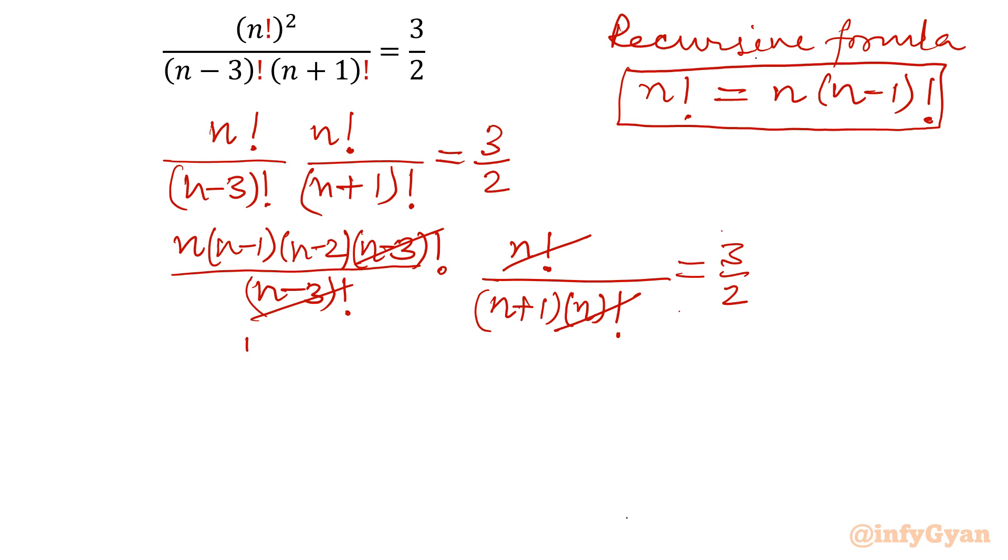Now what is left? n, n minus 1, n minus 2. Now let's cross multiply the numbers and variables. So I will write 2 times n. Let me take the product of n minus 1, n minus 2. So it will become n square minus 2n minus n, minus 3n plus 2 equal to 3 times n plus 1.